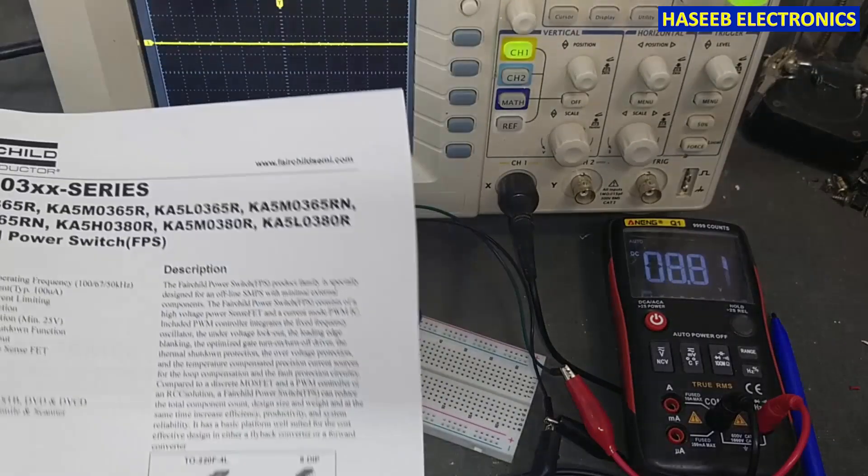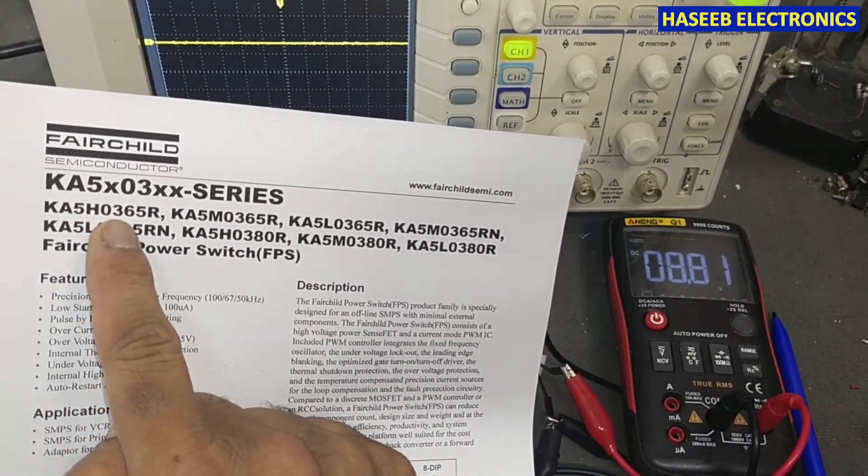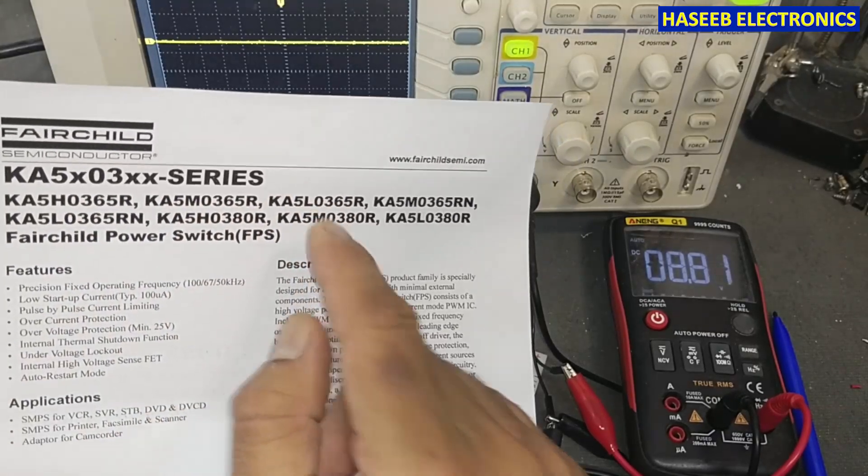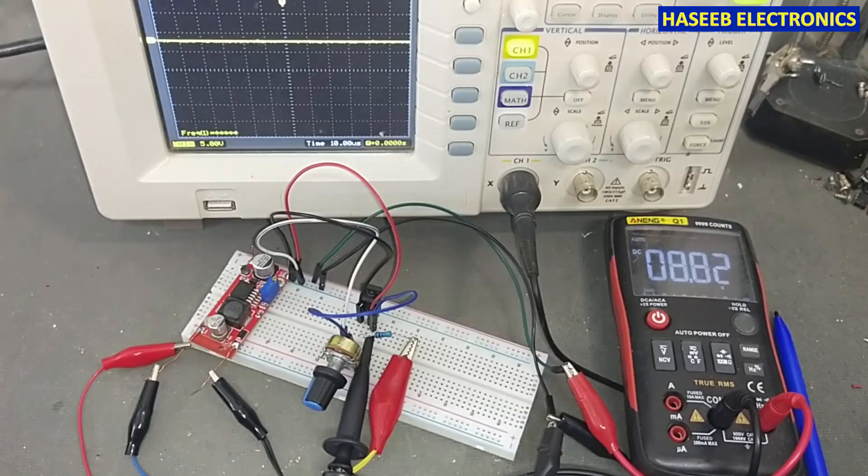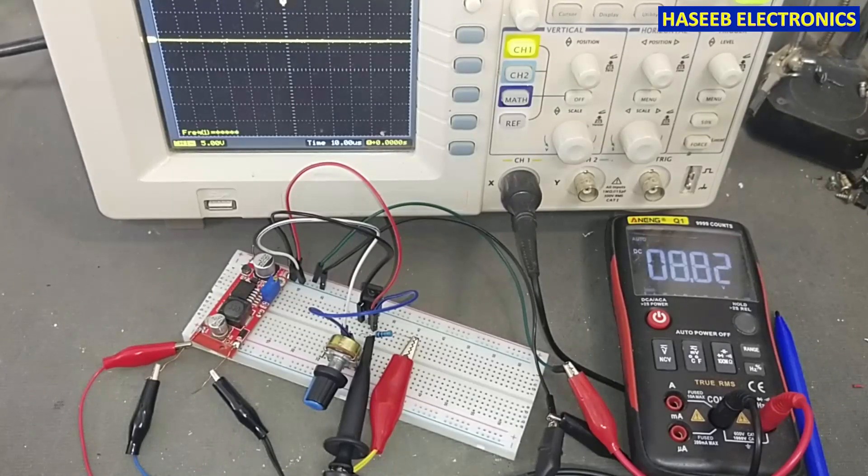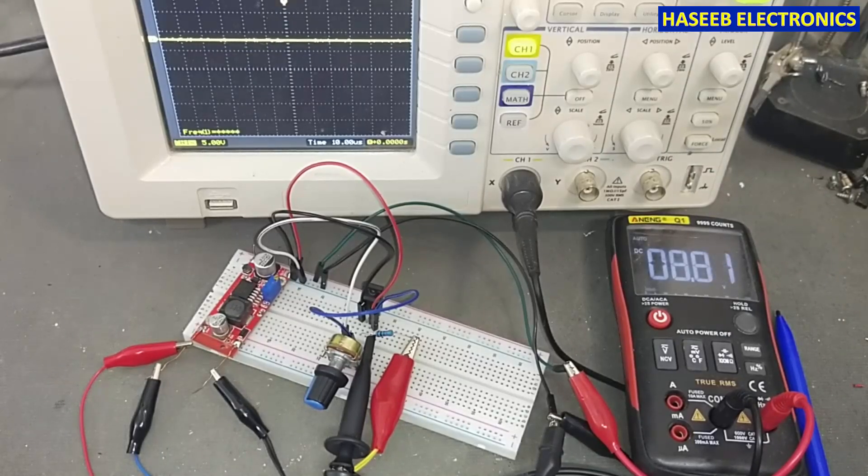If you have IC H that will work at 100 kilohertz, M 67, L 50 kilohertz, I hope you enjoyed this video. If it is good, hit the like button. If you have any question, please write in the comments. Thanks for watching, assalamualaikum warahmatullahi wabarakatuh.